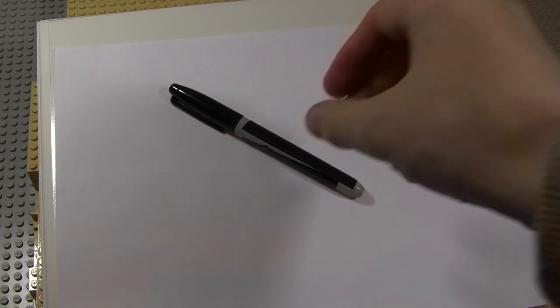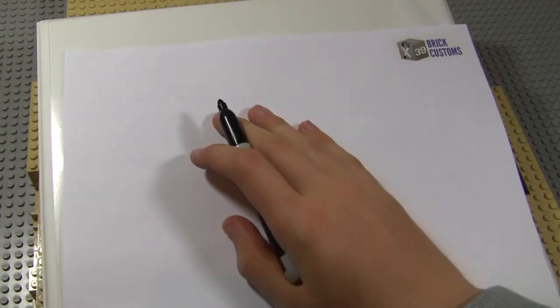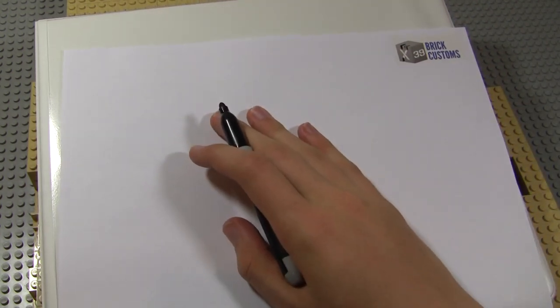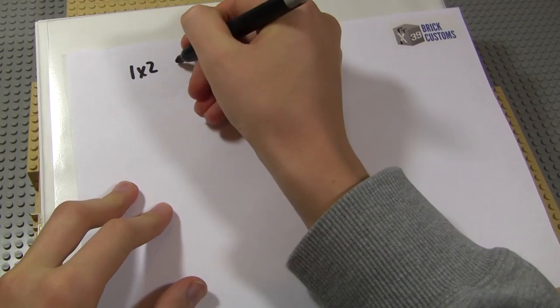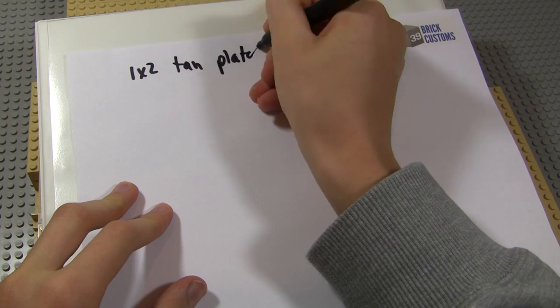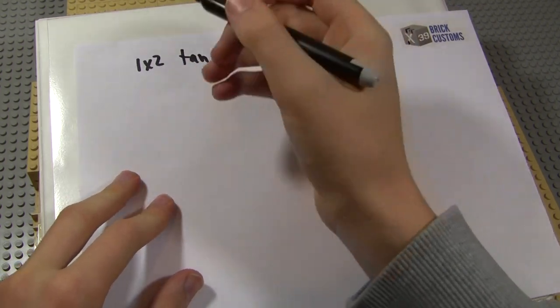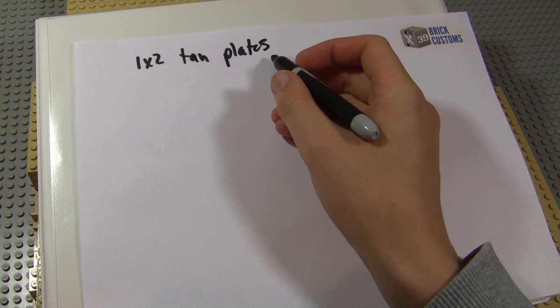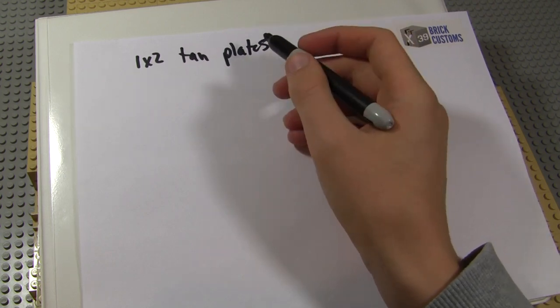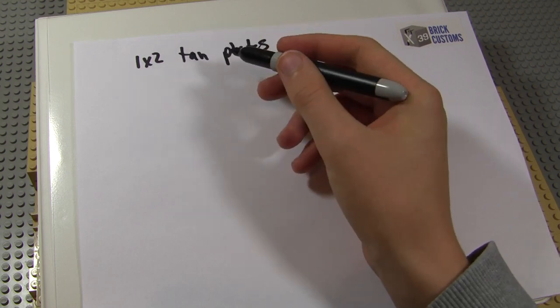Alright guys, so we're going to be going over how to order these parts for the MOC. We have a few main pieces that we're going to need to finish this MOC and to really get started. So we're going to start by making a simple list. I'm just going to start listing these off on this piece of paper. So first off, we need some 1x2 tan plates. Sorry if my handwriting is bad. We need a lot of those. We're probably going to need, I want to say at least 1,000, but we'll get into how we estimate that later.